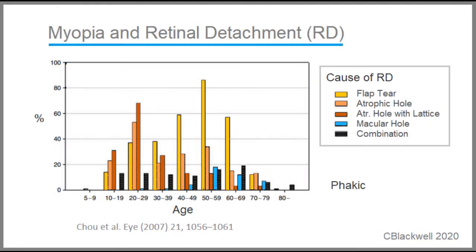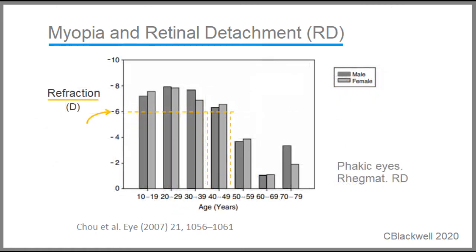A large series of patients with retinal detachments relates mechanism of detachment to patient age. The orange bars represent atrophic holes and lattice as a major cause of detachment under age 40. Flap tears are more prominent in middle age, but there is still a significant portion under age 40. In the same study, average refractive error for each age group of retinal detachment reflects that retinal detachments in young people are associated with significant myopia.